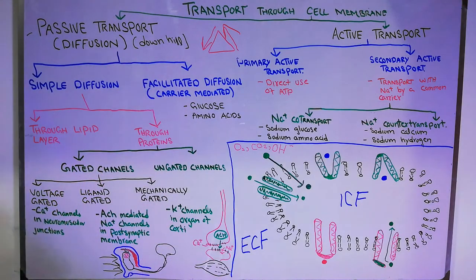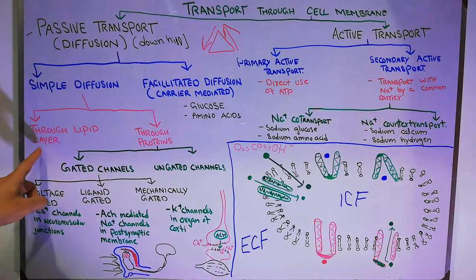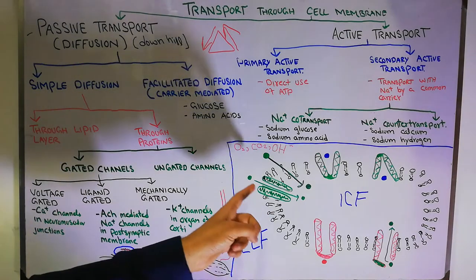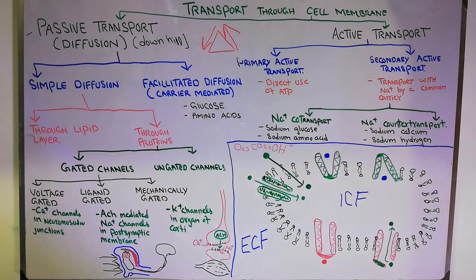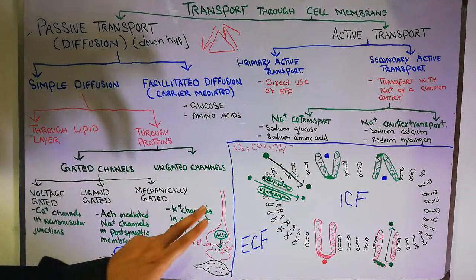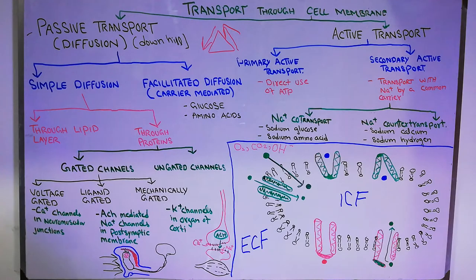Simple diffusion does not need any carrier, while facilitated diffusion needs a carrier. Simple diffusion is further divided into two types: through the lipid layer or through the protein. Substances like oxygen, carbon dioxide, and alcohol are soluble in lipids and can come in or go out directly through the lipid bilayer without any carrier or interruption. Other substances like sodium, potassium, and glucose come through the proteins.